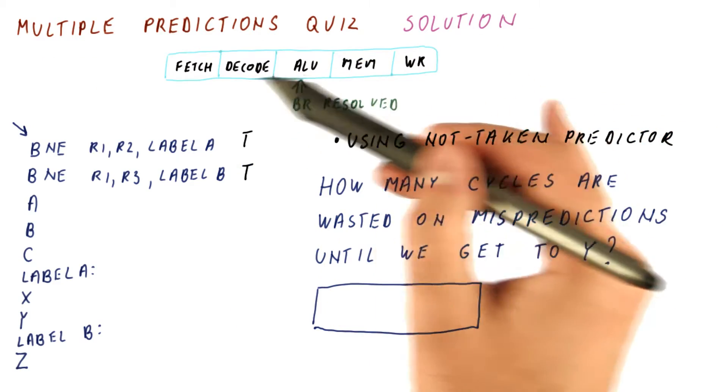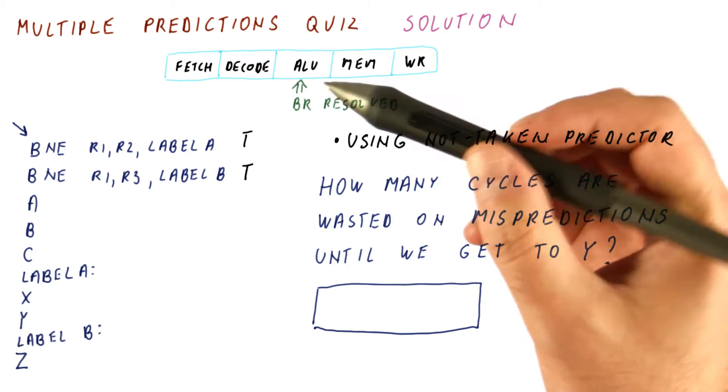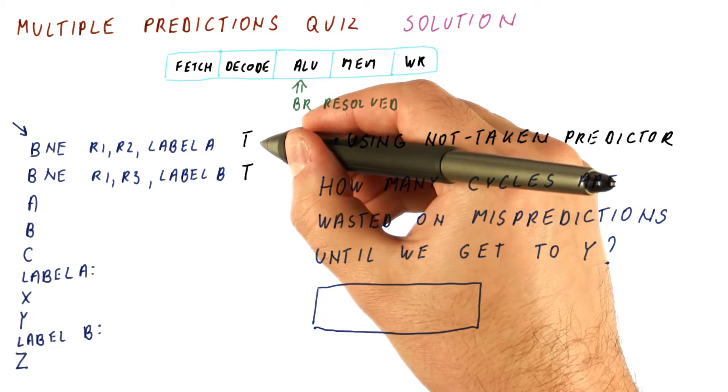Let's look at the solution to our multiple prediction quiz. Branches are resolved in the third stage, which means that we will fetch this branch,